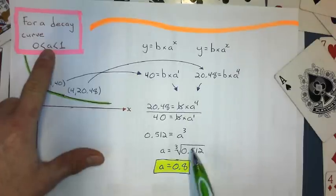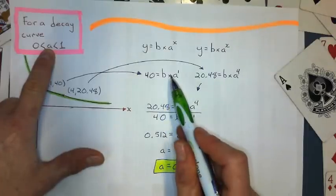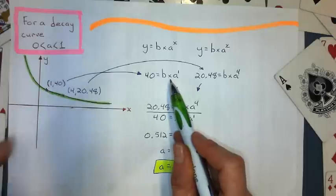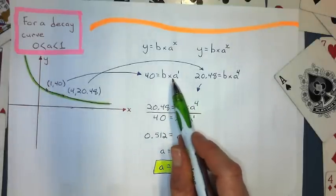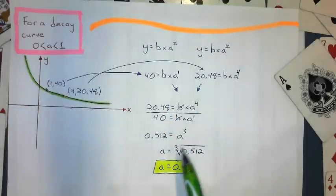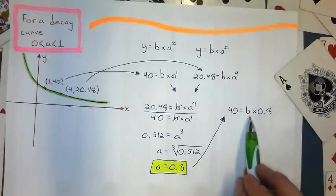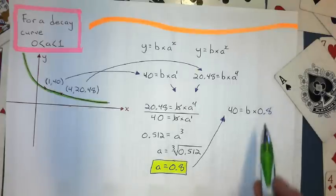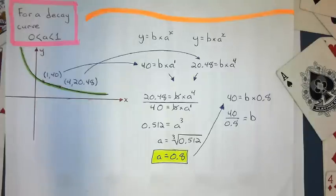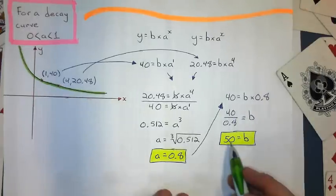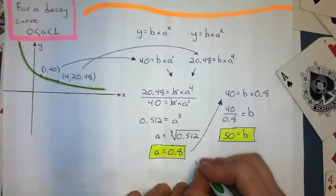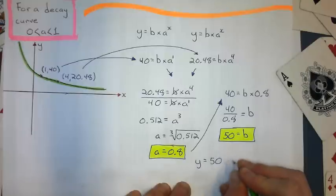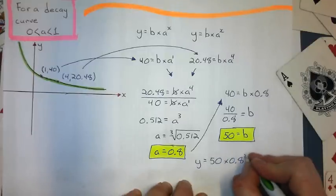So I take that. And I'll probably substitute it back into this equation because that's a simpler equation. I get 40 equals b times 0.8. I don't need to put that to the first power. So to solve for b, I just divide by 0.8. So I get a y intercept of 50. And my equation is y equals 50 times 0.8 to the power of x.